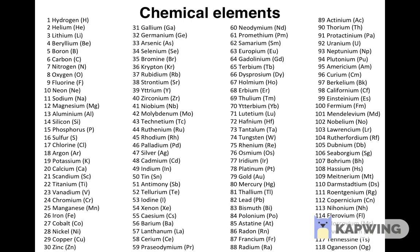For a neutral atom, the number of electrons around the atomic nucleus is the same as the number of protons in the atomic nucleus. Therefore, the number of electrons in a neutral atom of any element is the same as the atomic number.